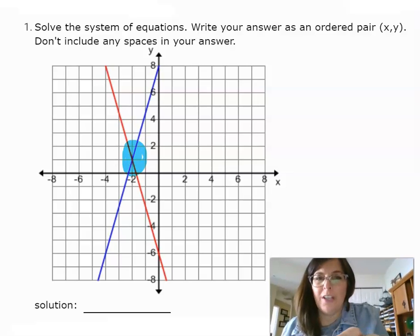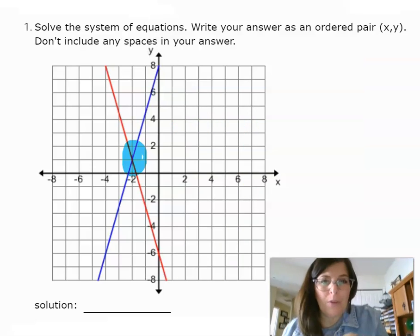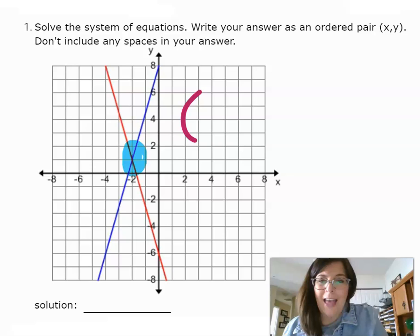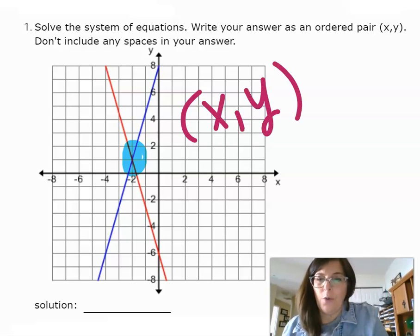So the solution, guys, it's the ordered pair where these babies cross. So what's the x, y coordinate here? So this is x is negative two and up one.